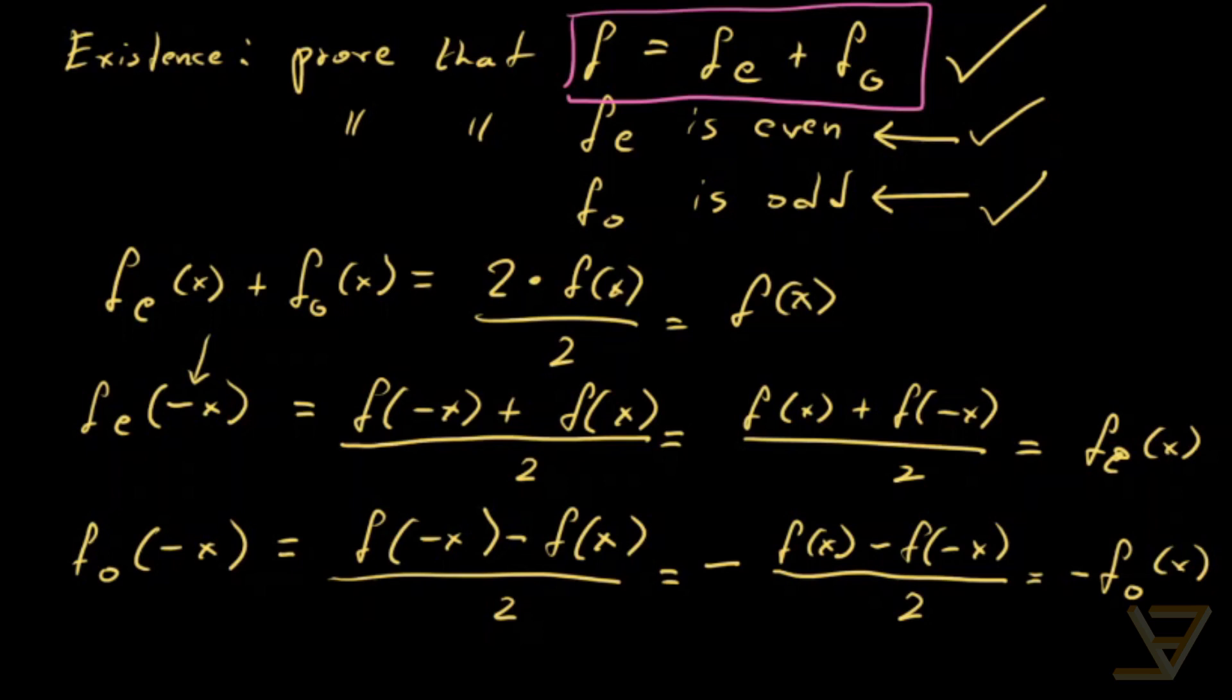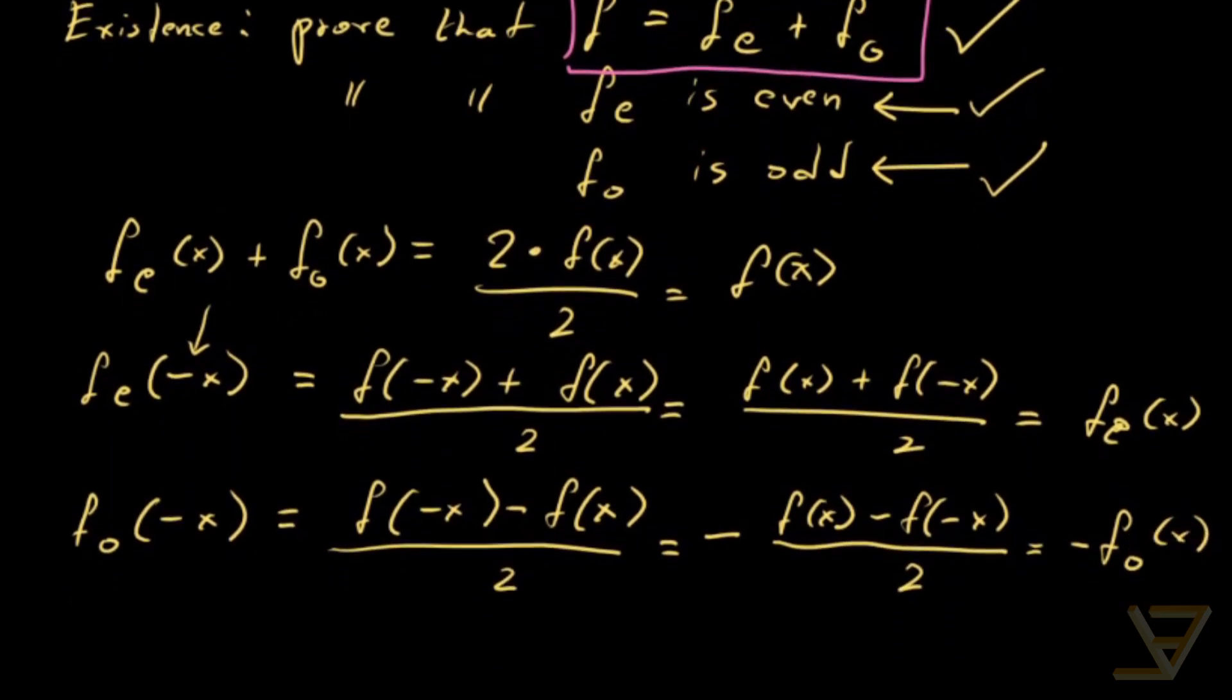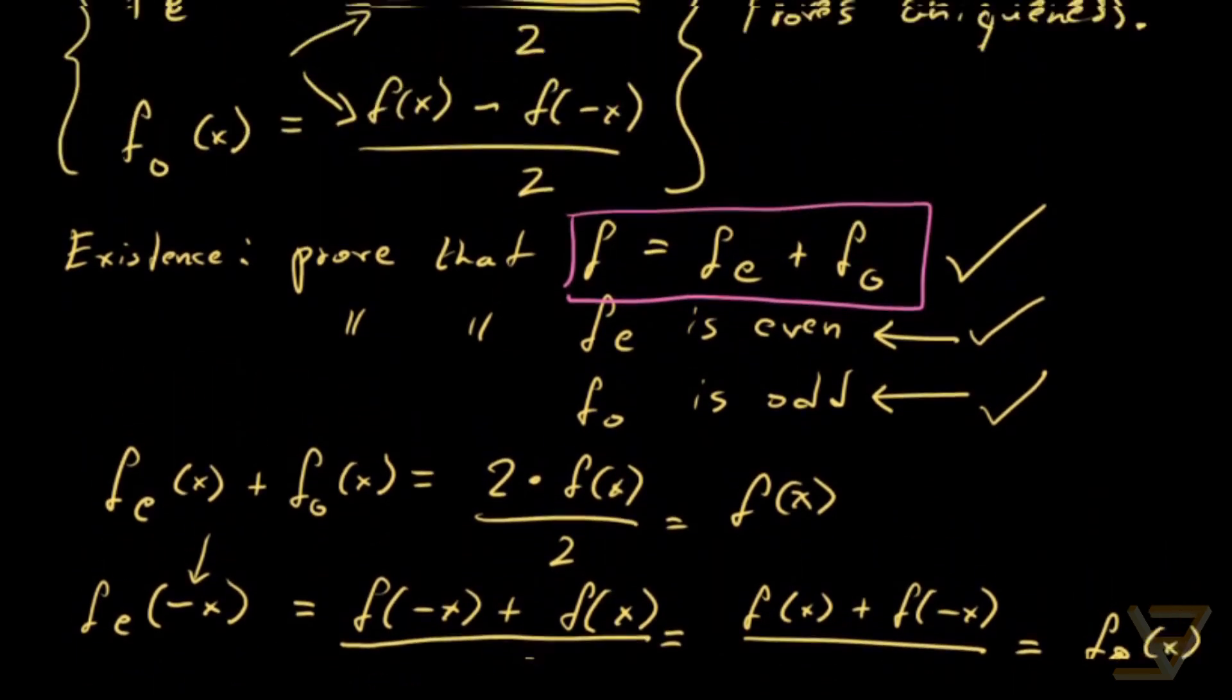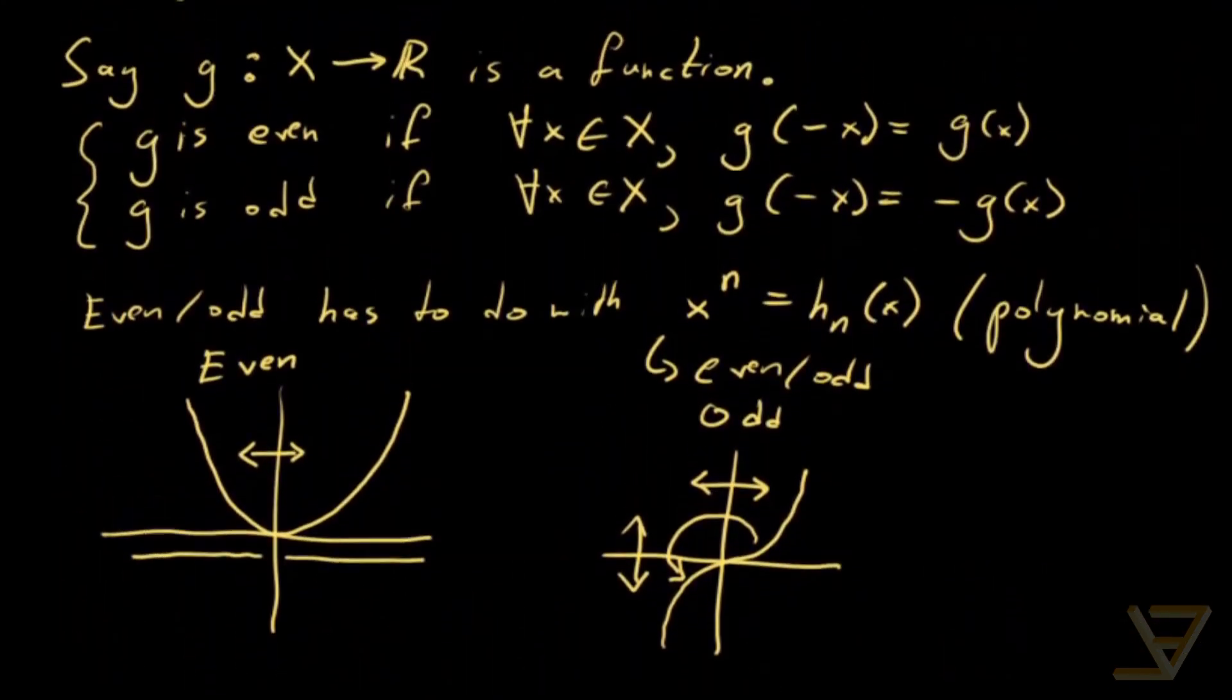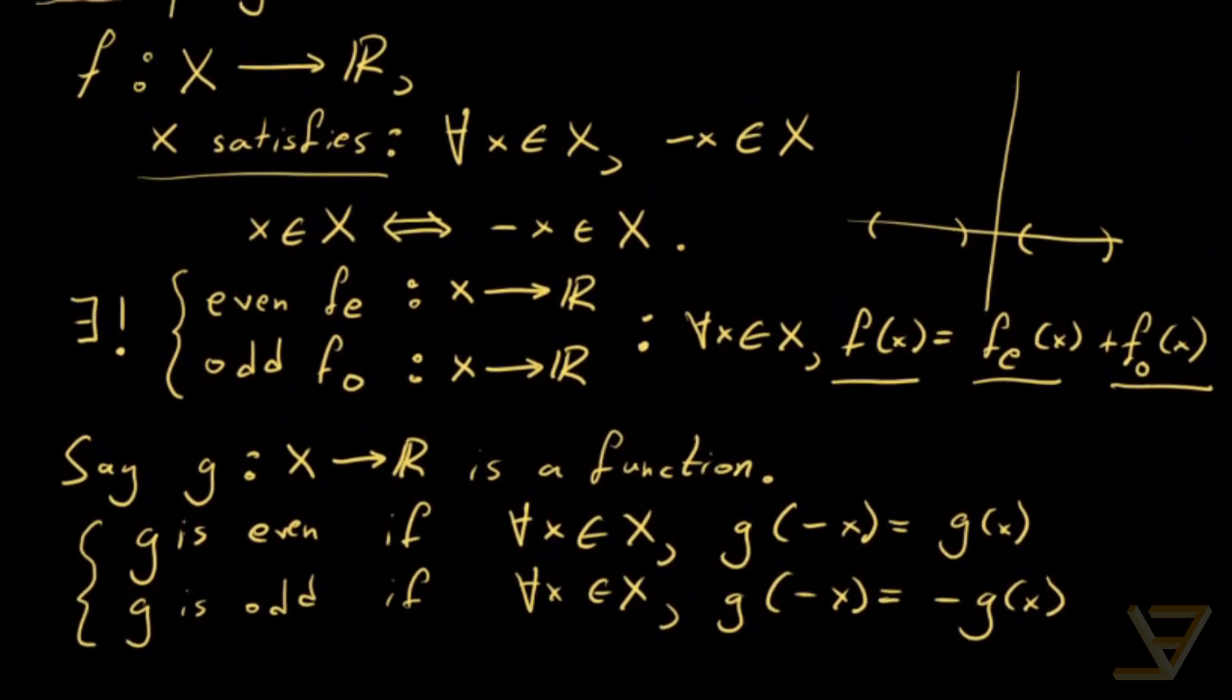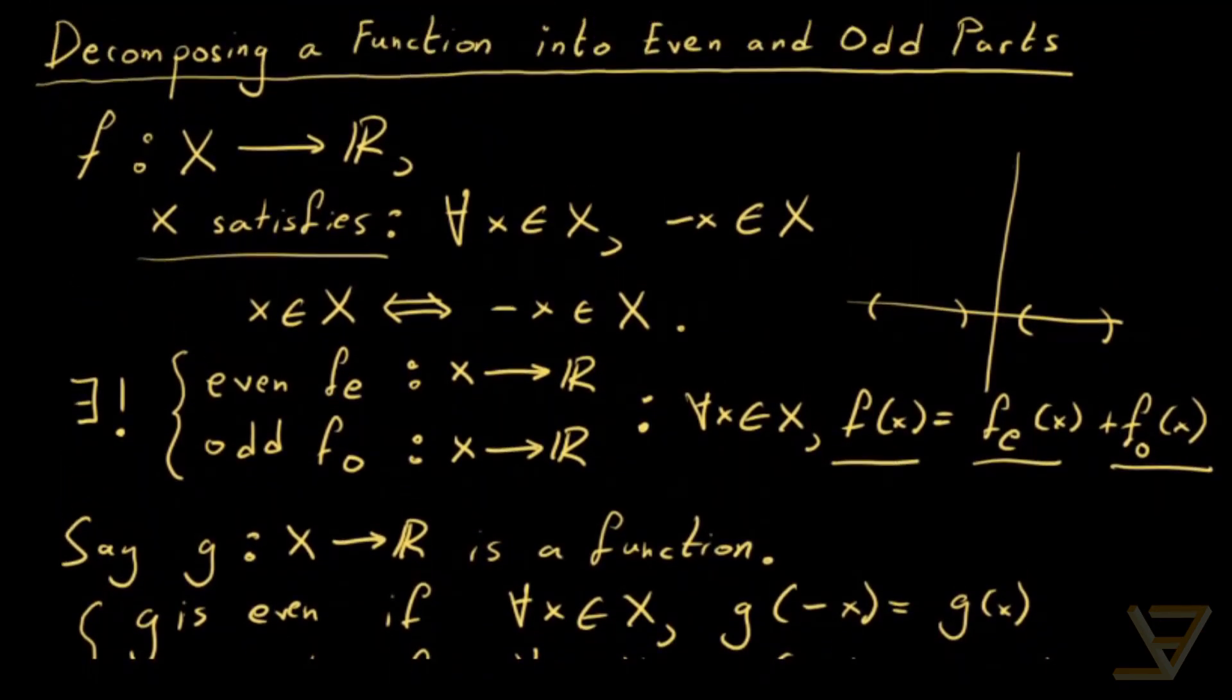So that takes us to the end of the proof. Let's do a recap. First we talked about the property that we need in order to actually sensibly talk about even and odd functions. Then we defined the problem that we're going to be working on which is that there exists unique even and odd functions that allow for this additive decomposition.